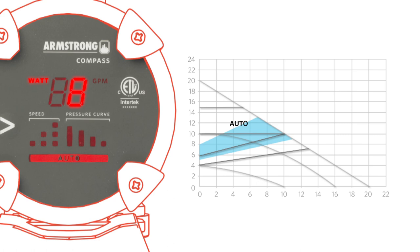The display alternates between power consumption and flow through the circulator. These indicators provide useful information when setting up or troubleshooting an installation.